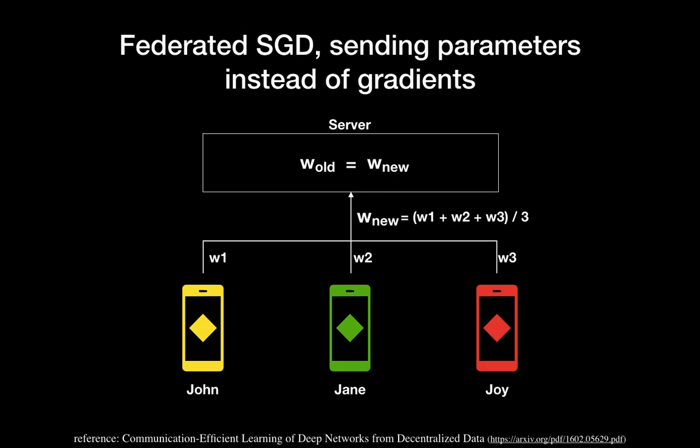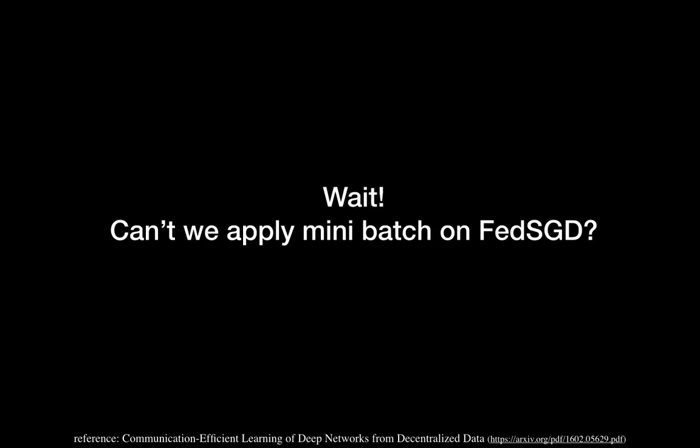Instead of the gradient, you can also send the parameters. After you calculate the gradient, you do the gradient descent from each device and get a new updated weight value per device for John, Jane, and Joey — that's W1, W2, W3. You can also average these values and replace the old W value with the new W value from the server. That's the basic idea.